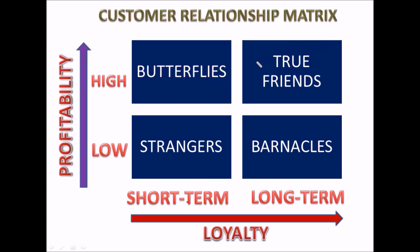Then come True Friends. True Friends are those whose profitability is high as well as they have long-term loyalty with your company and brand. The company must focus on increasing relationships and maintaining the database of True Friends because they are very profitable. You can say this is the 20% of your entire customer base which gives you 80% profit — that is Pareto's Law.